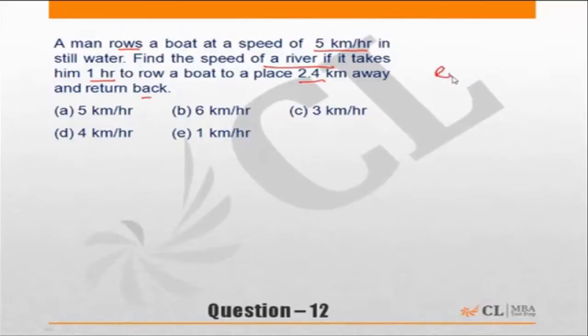Let us assume that the speed of river is y kilometers per hour. Speed of boat in any case is given to us as 5 kilometers per hour. We need to find the speed of river given that it takes him 1 hour to row a boat to a place 2.4 kilometers and to come back.